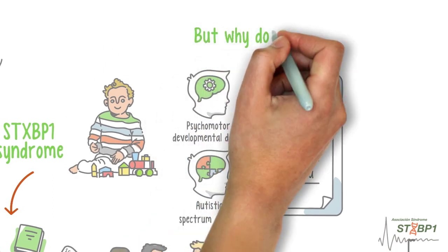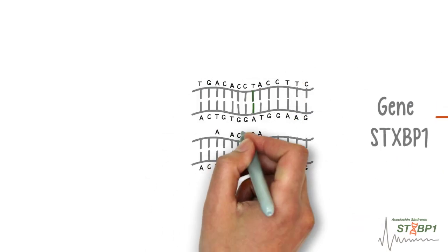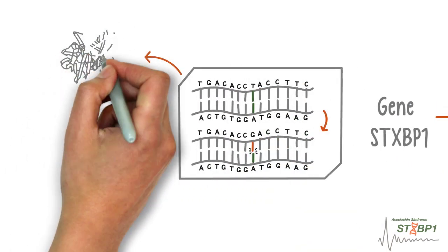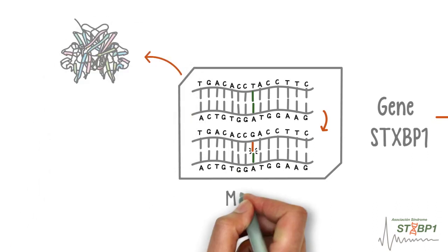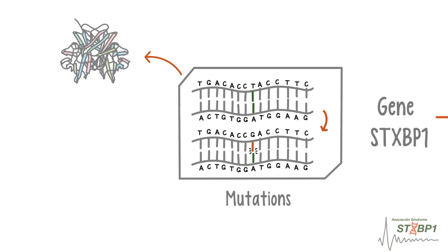But why does this happen? Genes are DNA fragments that contain the instructions to form a protein. The changes that take place in the genes are called mutations, and that can prevent a protein's formation or create an abnormal protein.